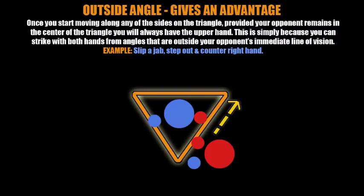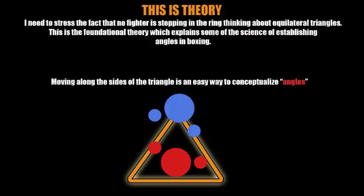It doesn't work when you're punching at your opponent because then you're activating his own usage of the triangle theory. What you're seeing in this image is the guy in blue shoots his jab, and the guy in red slips the jab and steps along the sides of the triangle — stepping to the right side, but you could go left or any direction. I must stress that this is a foundational theory. No fighter is going to step in the ring and think about equilateral triangles — this is a foundational theory which explains some of the science of establishing angles in boxing.